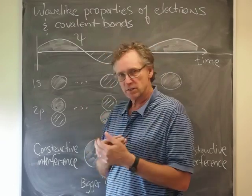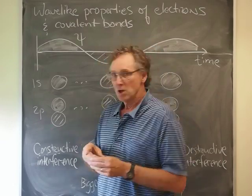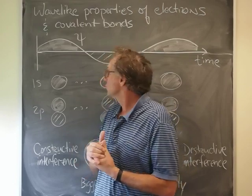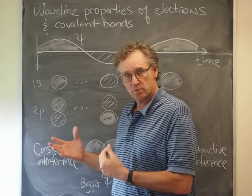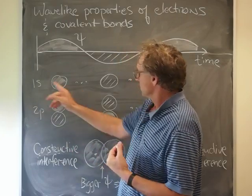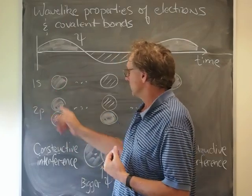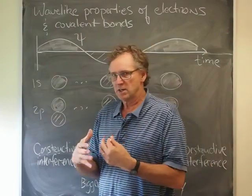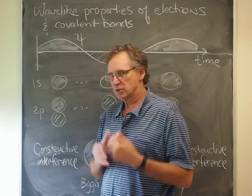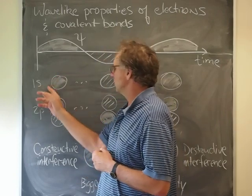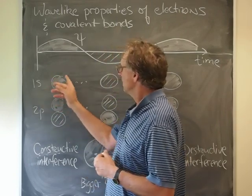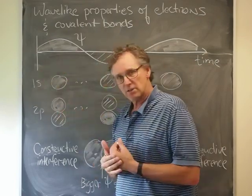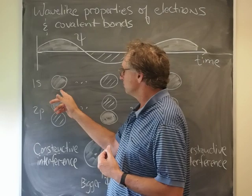And we're accustomed to thinking about these wave-like depictions of electrons as orbitals. That is to say, here's a 1s orbital and it has this spherical shape. So how do waves manifest themselves in this picture? Well, a way to think about it is that at this point in time, the phase of that orbital is positive.